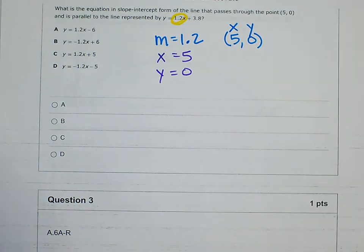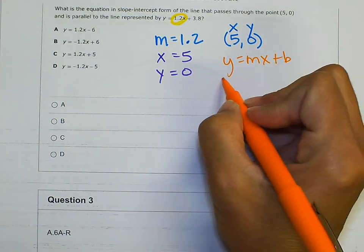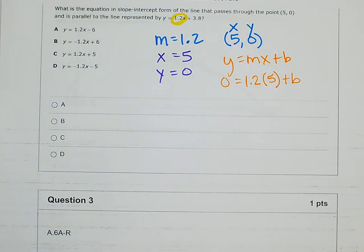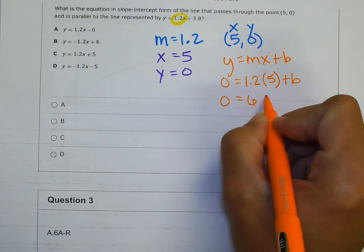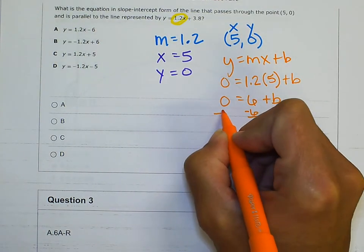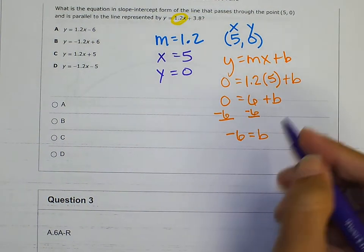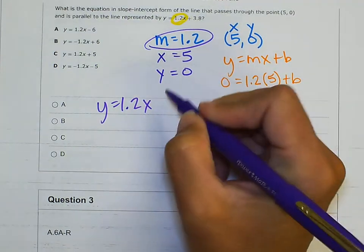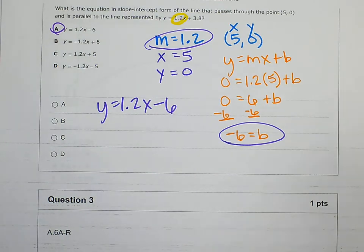So now I'm just going to use y = mx + b. I plug in: 0 for y, 1.2 for m, 5 for x, and I don't know b. Because I know three of the four things, I can solve for the missing one. 1.2 times 5 is 6. I subtract 6 from both sides to get b by itself, so b is negative 6. My final answer is y = 1.2x − 6, answer A. Plug in everything you know, solve for b, then write your equation.